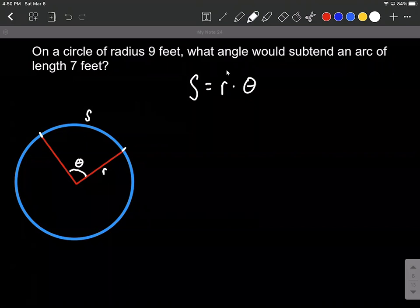All right, so as we take a look at this, some of this information is given to us, and some isn't. So on a circle of radius nine feet, we have nine feet. That part's given to us. We don't know theta. We want to know the angle. And then we know this subtendent arc of length seven feet, that's telling us S is going to be seven feet.